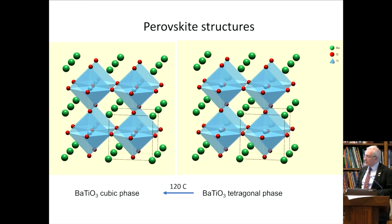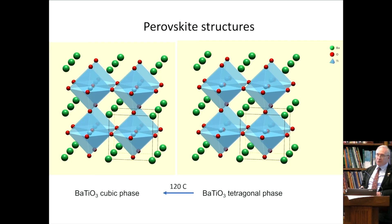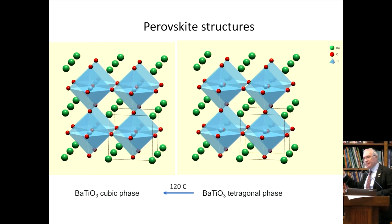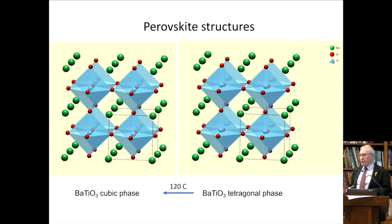On the left we have barium titanate. At the high-temperature phase it's cubic. The green balls are the barium atoms, the red ones are oxygens, and the oxygens form these octahedra drawn in blue. At the centre of the octahedra, the little blue atom is titanium. When cooled below 120°C, it becomes slightly distorted — a tetragonal phase — and the titanium atoms move off-centre in the vertical direction. This makes the material electrically polar, which is why it's very important. It is still used today in capacitors as a very good dielectric material.